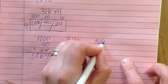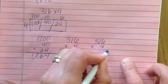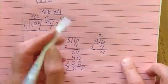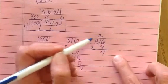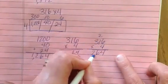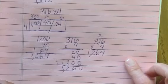Last but not least, let's try the standard algorithm. 4 times 6 is 24. Put down the 4, carry the 2. 4 times 1 is 4, plus the 2 is 6. 4 times 3 is 12. 1,264.